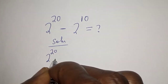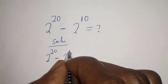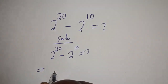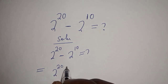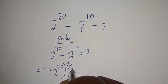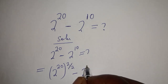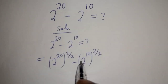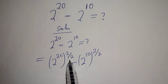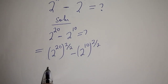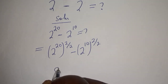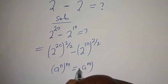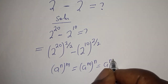2 raised to power 20 minus 2 raised to power 10 is what we are asked to find. This is equal to 2 raised to power 20 to the power of 2 over 2, minus 2 raised to power 10 to the power of 2 over 2, because this does not formally change the problem — if you divide 2 by 2, you have 1. Take note of this exponential rule: a raised to power n, to the power of m, equals a raised to power nm.